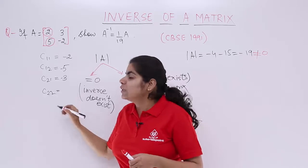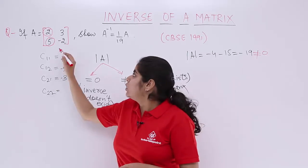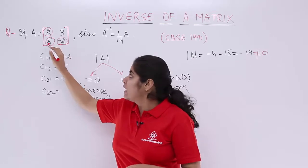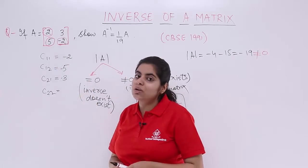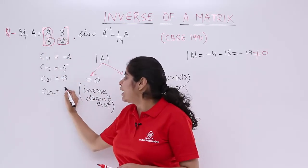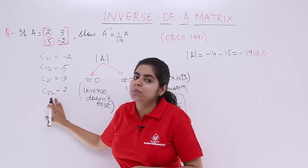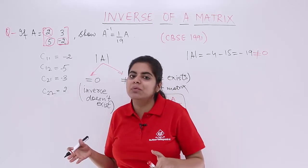Next, last but not the least is C22, which is the corner most element minus 2. Ignore the second row, ignore the second column. You have plus 2, and only plus 2 because 2 plus 2 is 4 which is even number.